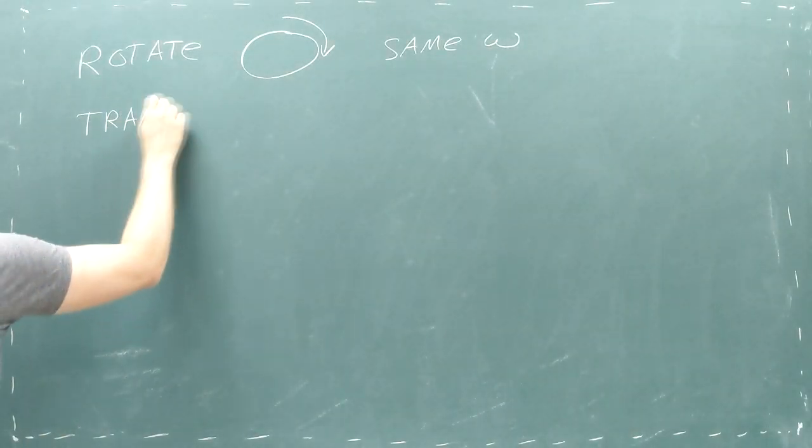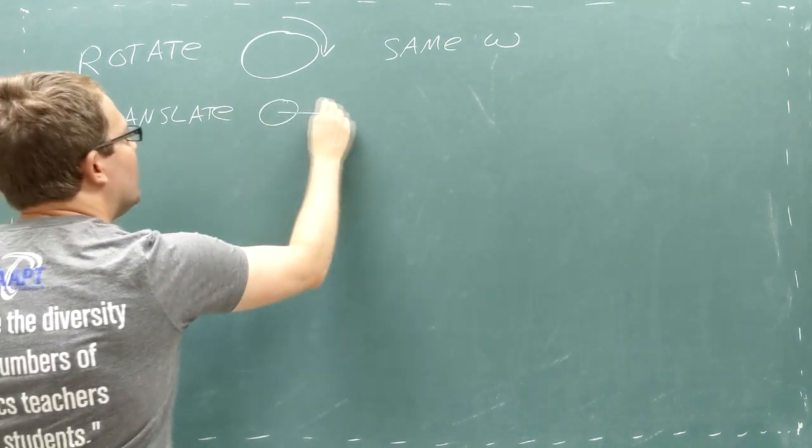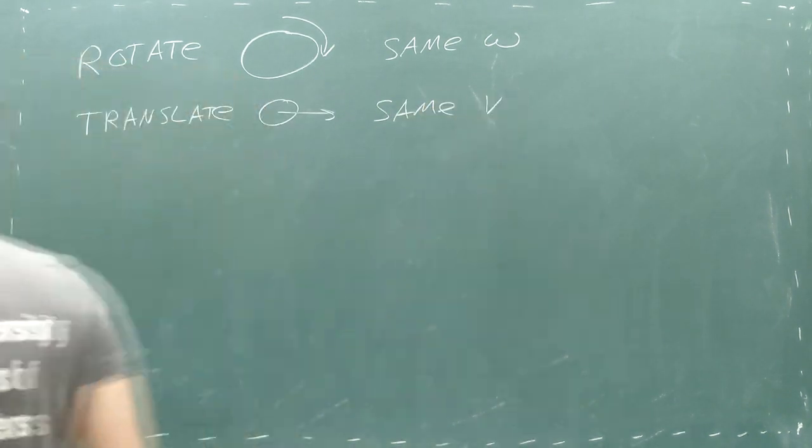When a shape translates, all the particles in the shape move in the same direction at the same linear velocity.